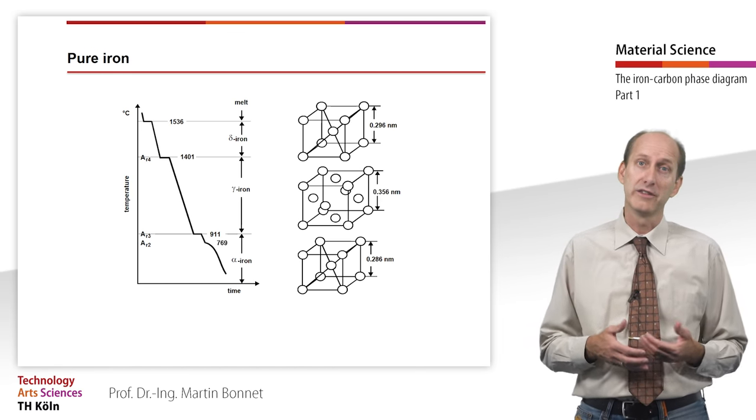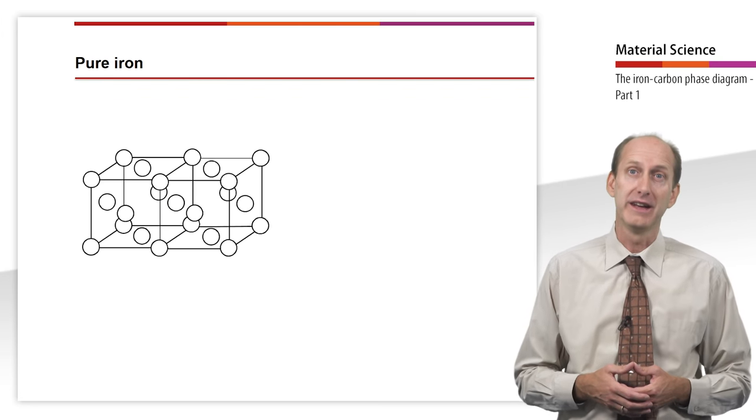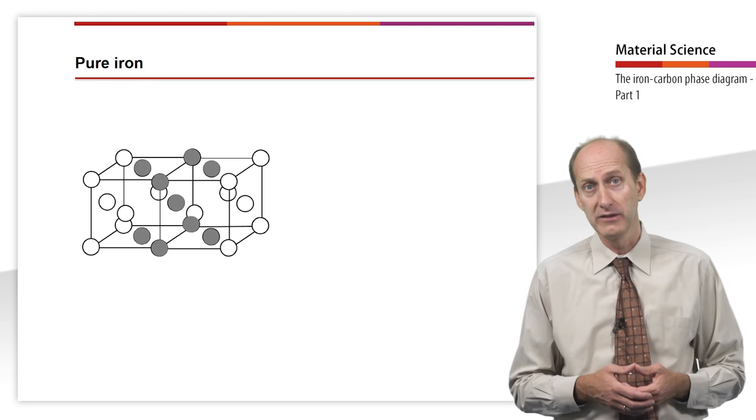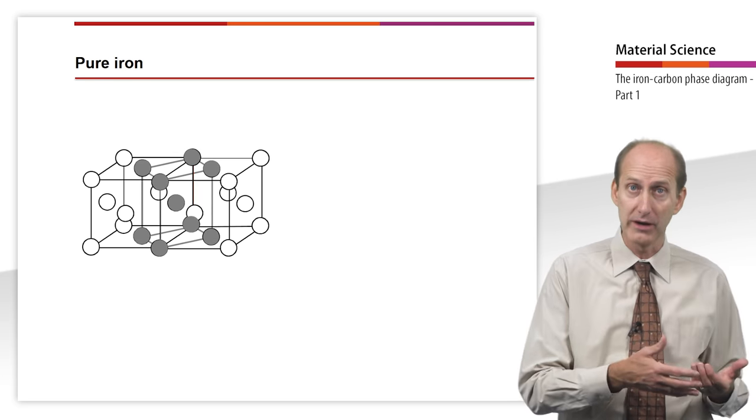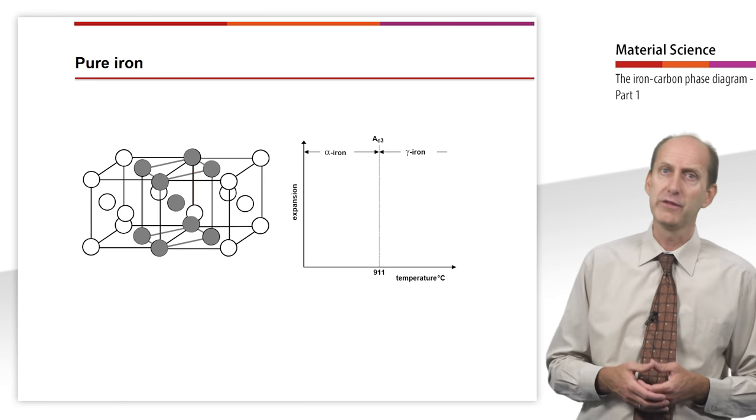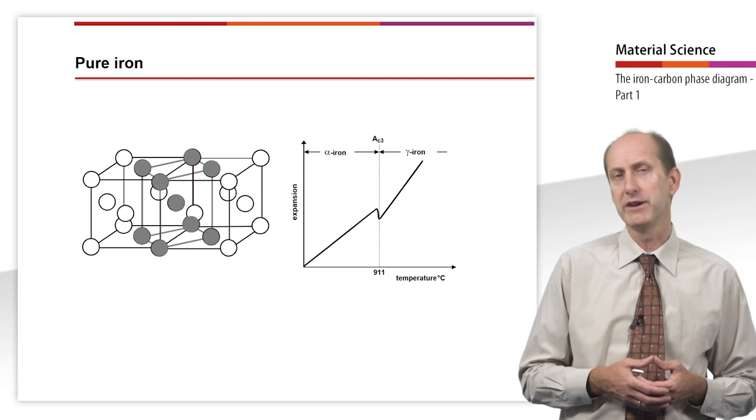However, another lattice transition does not occur. The transition at the arrest point AR3 at 911 degrees Celsius, that is to say the transition from gamma to alpha iron, is of particular importance. As can be seen in this figure, the transition takes place with minimal movement of the atoms.